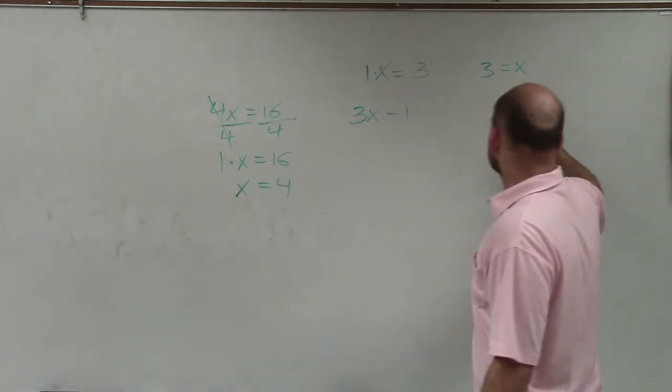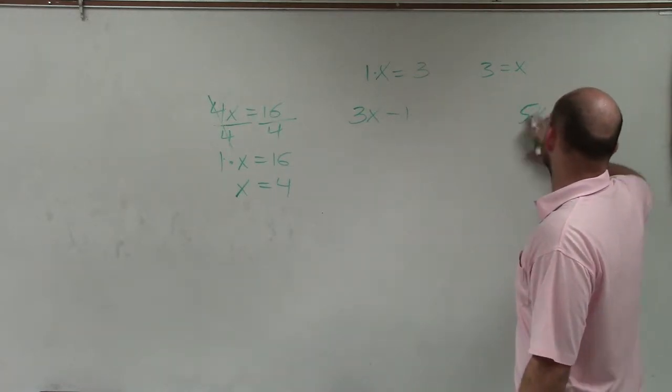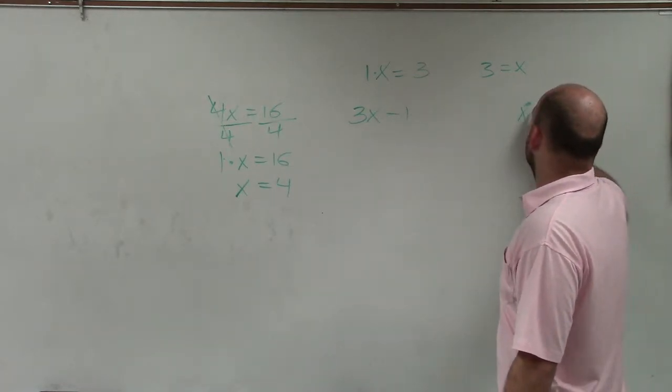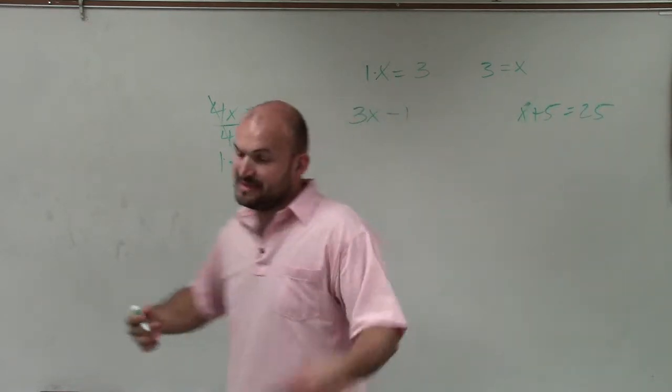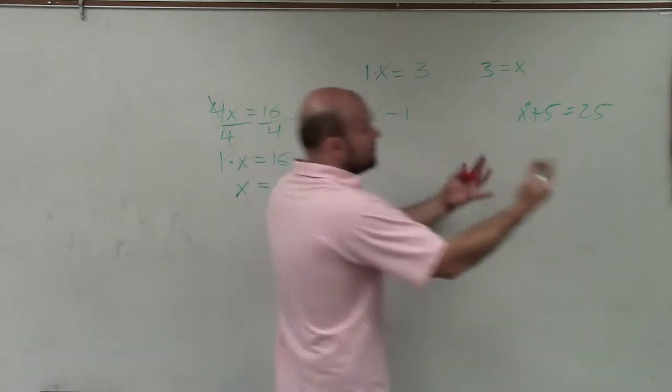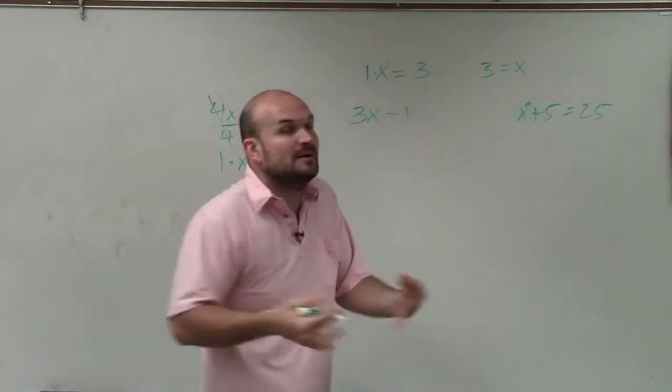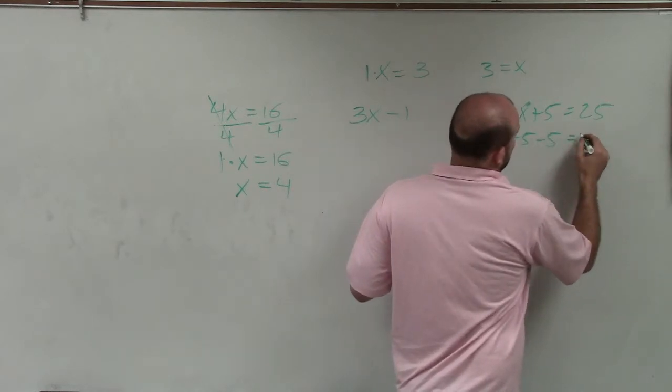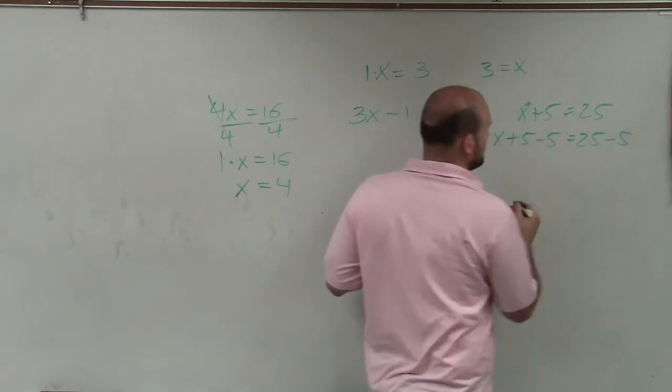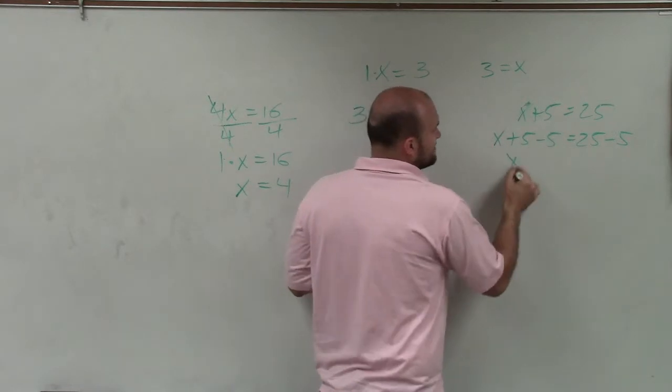Another example would be, you know, let's do x plus 5 equals 25. Now you can see my variable is being added by 5. So I want to subtract. I want to undo it being added by 5 so it can be by itself. So I subtract 5 on both sides. Because 5 minus 5 gives me 0.